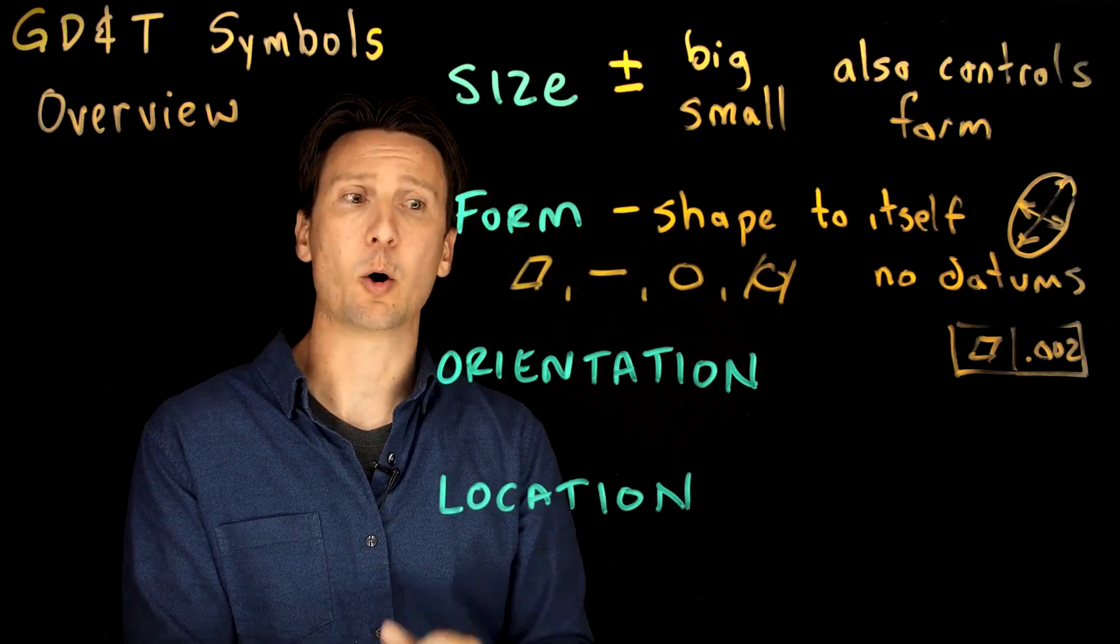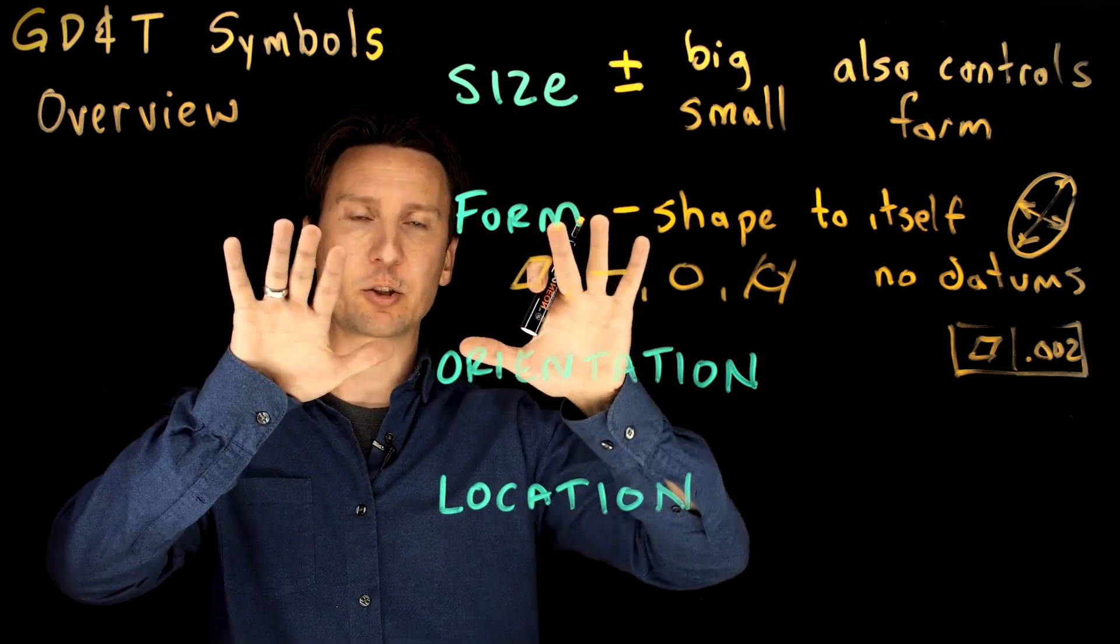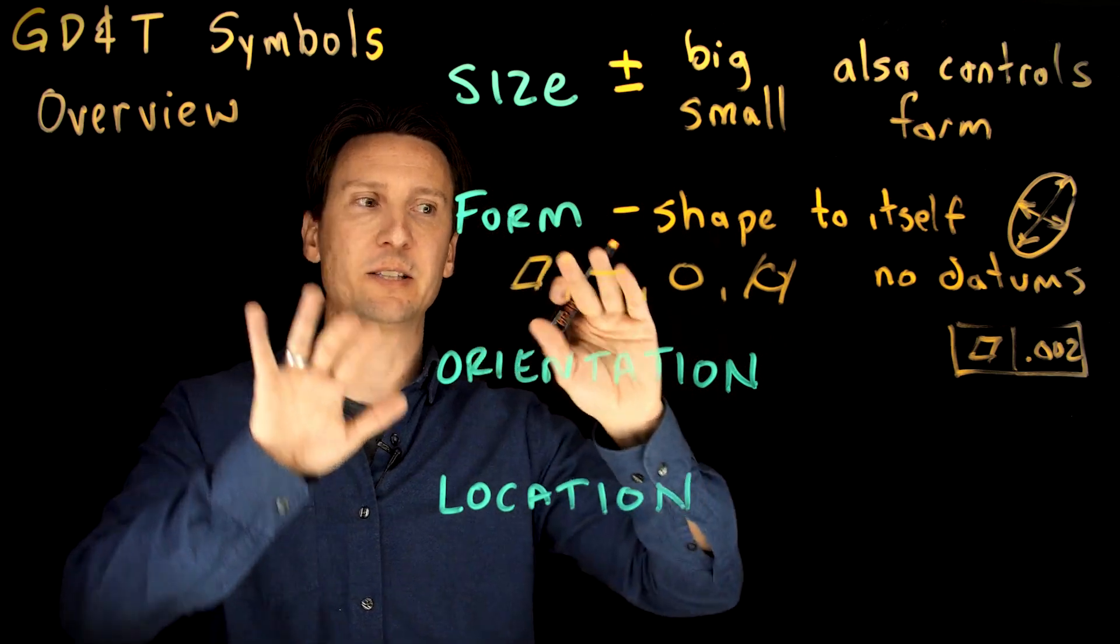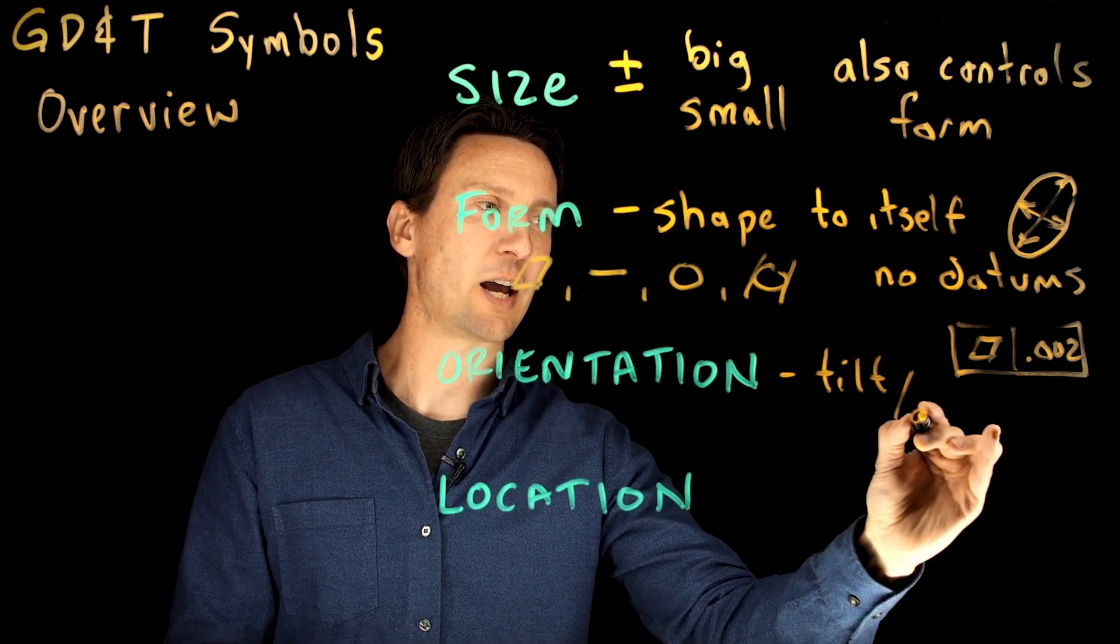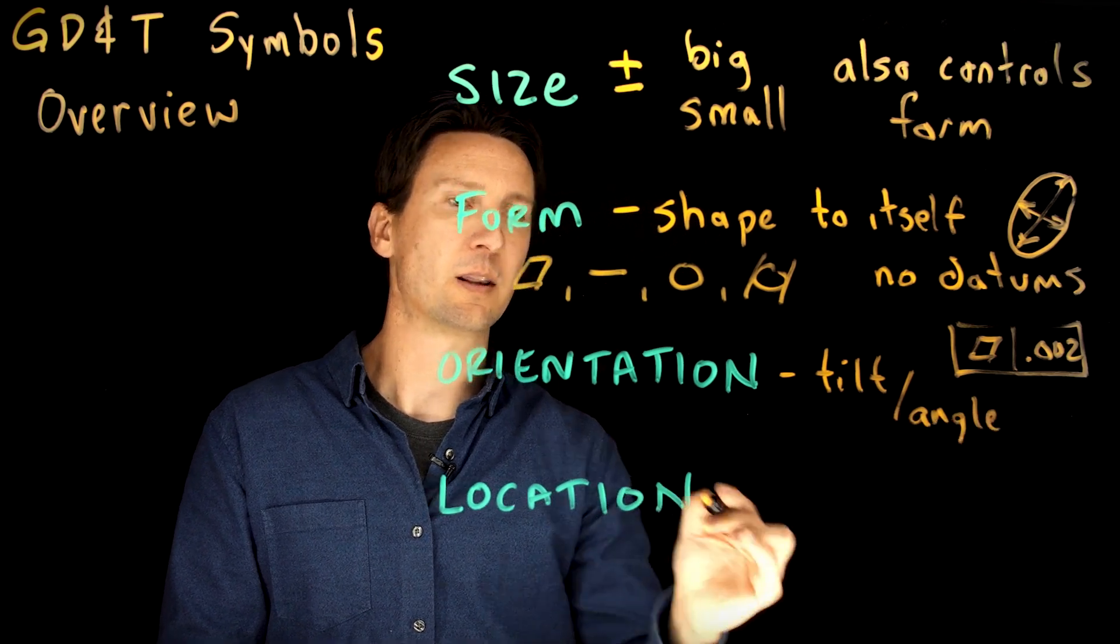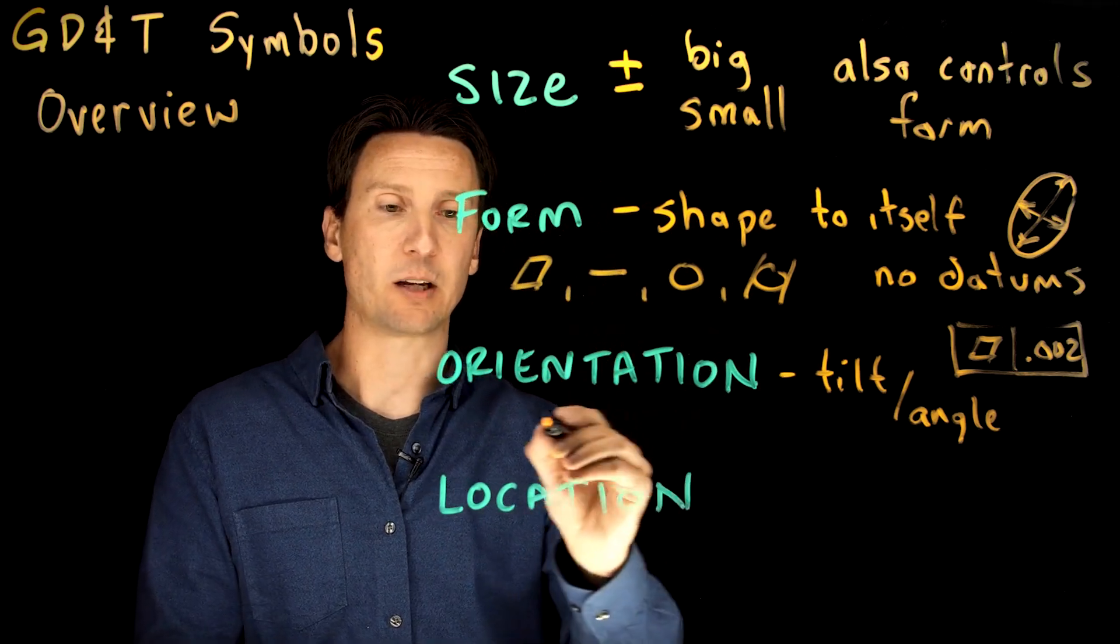Let's talk about the next category: orientation. Orientation is kind of a big word. I want to control the orientation of my screen, the orientation of my TV. You want to think tilt slash angle. That's what orientation is about: tilt, angle, how it's rotated relative to something else.